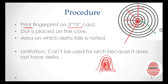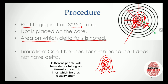Once the core is centered, we observe which concentric circle the delta of the fingerprint falls on. For example, if we place the fingerprint and the delta falls on a particular concentric circle, that circle determines how we classify the print.